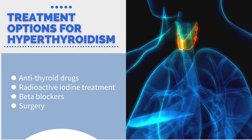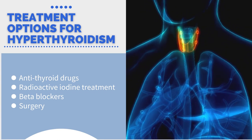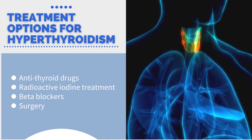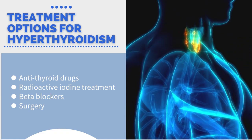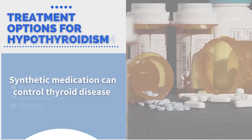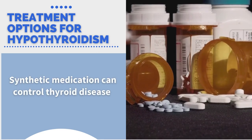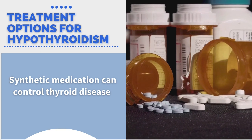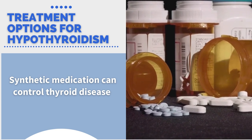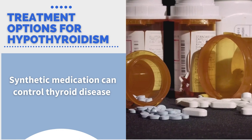If the condition is extreme, your healthcare provider may need to surgically remove your thyroid, in which case you will need to take thyroid replacement hormones for the rest of your life. Treatment for hypothyroidism is primarily thyroid replacement medication — a synthetic drug that adds thyroid hormones back into your body. By using this medication, you can control thyroid disease and live a normal life.